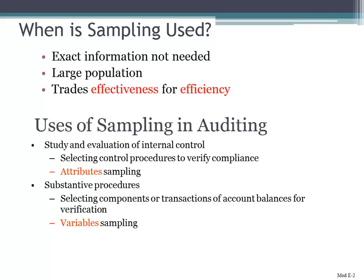With sampling, you know that exact information is not needed. Because if you need exact information, you're going to have to look at 100% of the items — not possible in an audit. You know that there are large populations, large amounts of transactions. You take a company the size of IBM or Microsoft — just imagine the amount of transactions that are flowing through there. So how do we, as auditors, get a handle on that and select a representative sample?